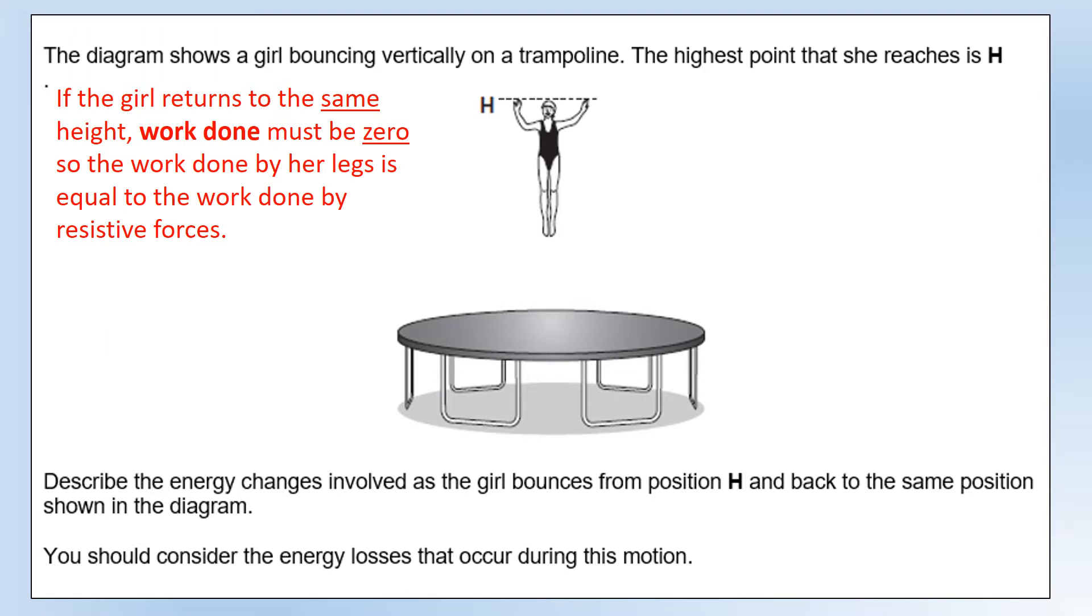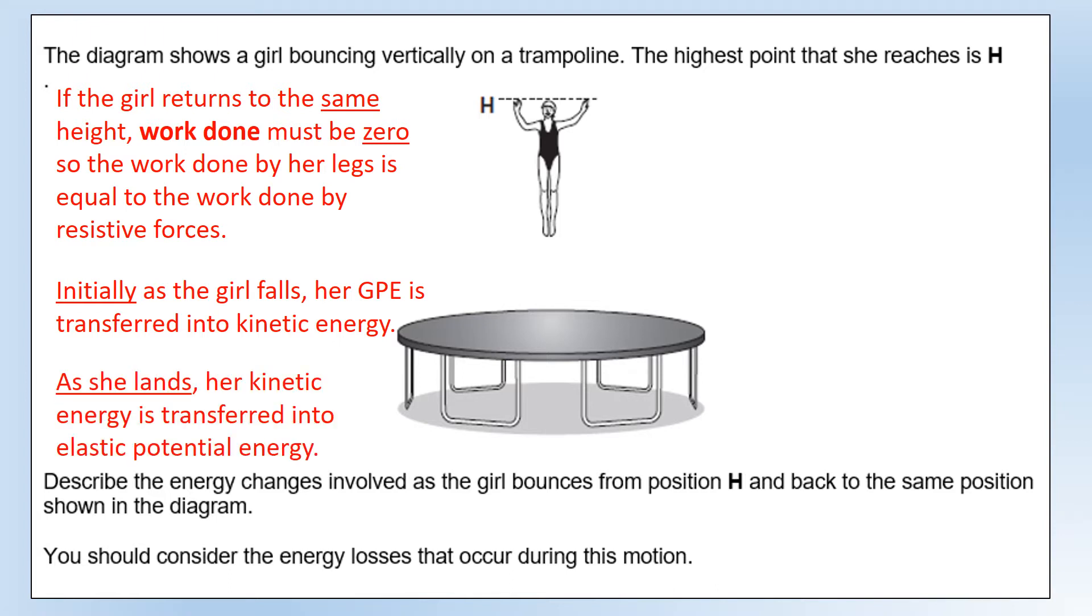Starting at H, the first energy transfer that happens is GP is transferred into kinetic energy as she moves downwards. Then, as she lands on the trampoline, her kinetic energy is transferred into elastic potential energy, stretching out the springs.